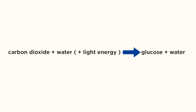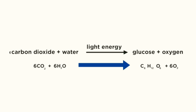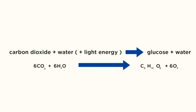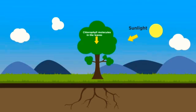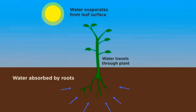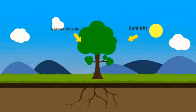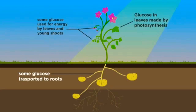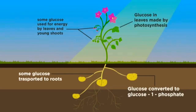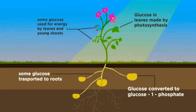Also, from the reaction of photosynthesis, it produces oxygen to keep us breathing. Transpiration and translocation is the process where plants and humans exchange gases. Some glucose is used for energy by the leaf and shoot, some glucose is transported to the root, and some glucose is used in the leaf made by photosynthesis.